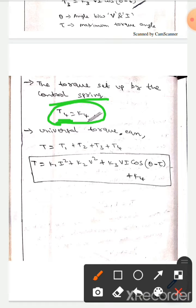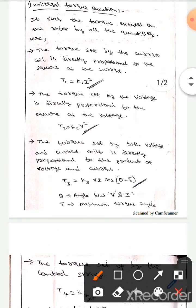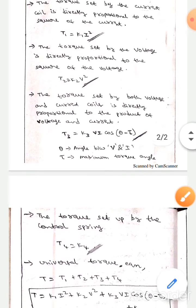By the universal torque equation, the universal torque equation T equals to T1 plus T2 plus T3 plus T4. We already know T1, T2, T3, and T4, so we will substitute those in this equation.